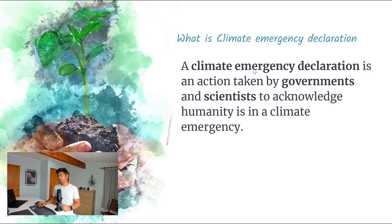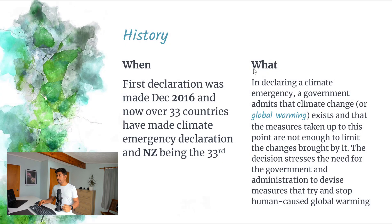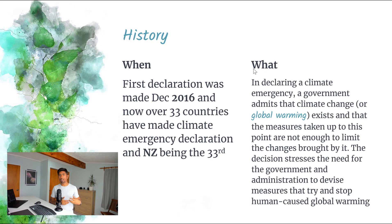The climate emergency declaration is an action taken by governments and scientists to acknowledge that humanity is in a climate emergency. If we talk about the history of this declaration, the first one was made in December 2016 — just four years ago. Now over 33 countries have made a climate emergency declaration, with New Zealand being the 33rd country to actually acknowledge this.